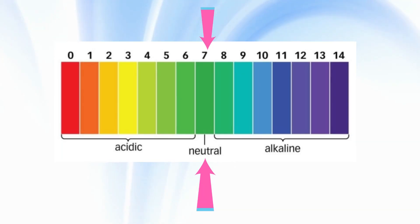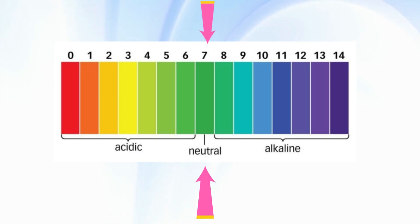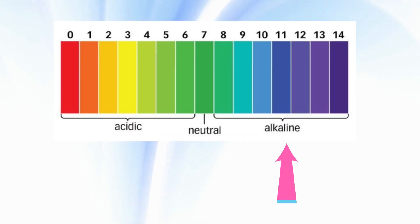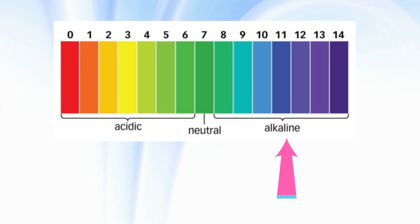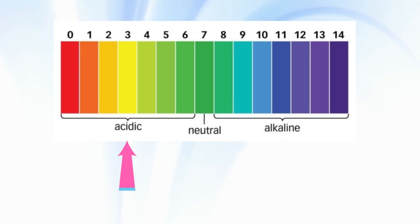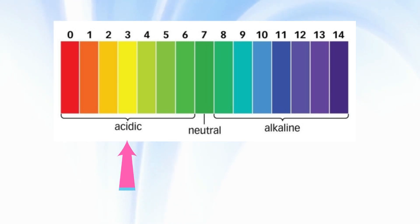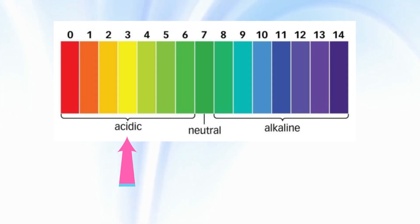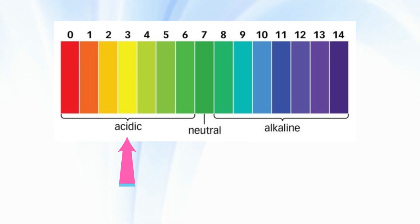A substance with a pH of 7 is neutral — pure water has a pH of 7. A substance with a pH greater than 7 is an alkali; the higher the pH, the more alkaline the substance. The pH of an acid is less than 7, which is also one of the properties of acid. Now you have clearly understood how the pH scale works.